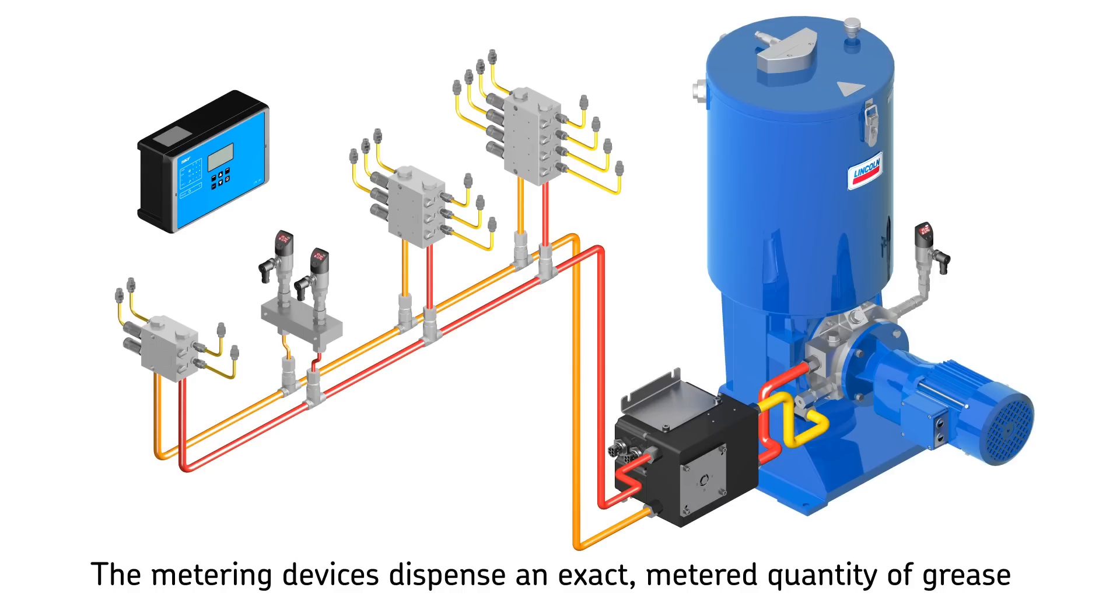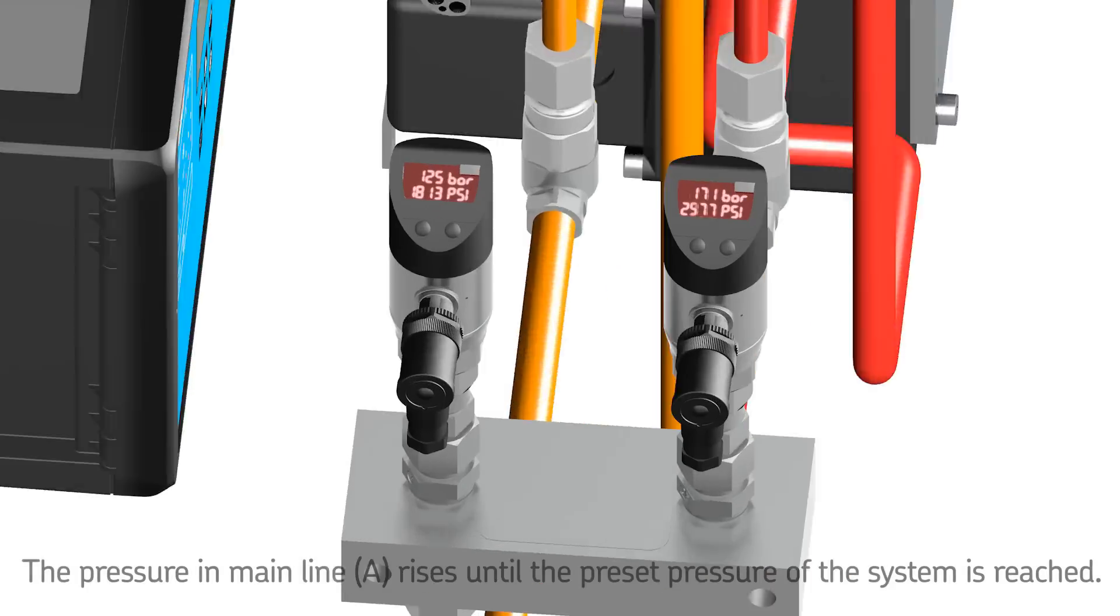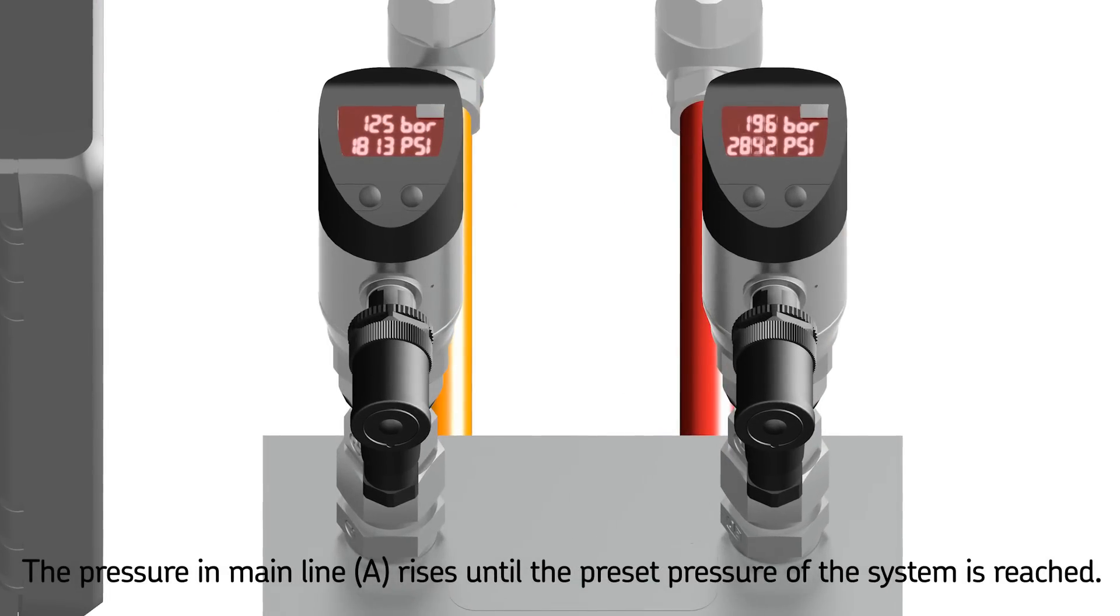the system is hydraulically closed, which causes the pressure in mainline A to rise until the preset pressure at the end-of-line pressure switch is reached. This switch is mounted in the mainline prior to the last metering device.